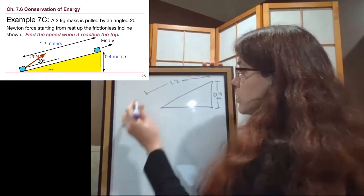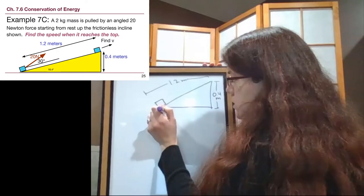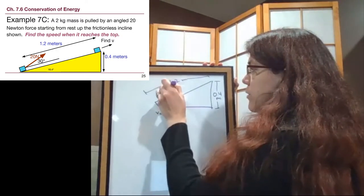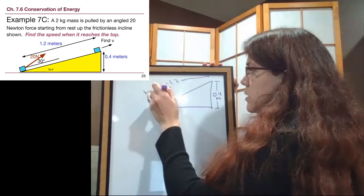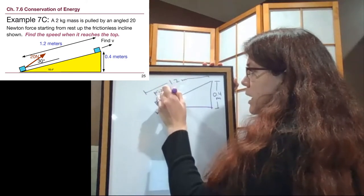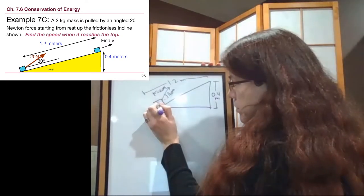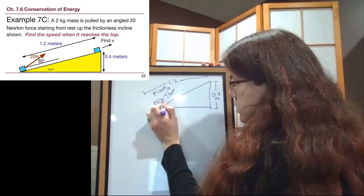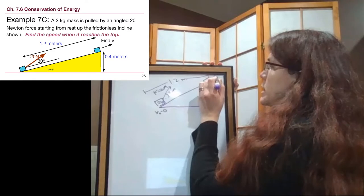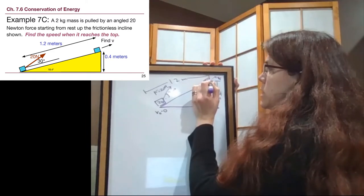The block starts at rest, so the initial velocity is 0. But we are pulling with a force of 20 newtons at an angle of 30 degrees. The 2 kilogram mass starts at rest. And our goal for this problem is to figure out what that final velocity is going to be of the 2 kilogram mass.